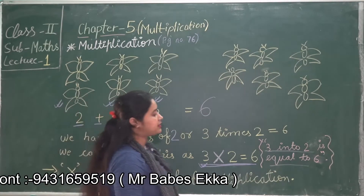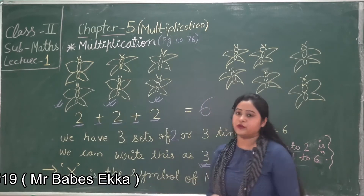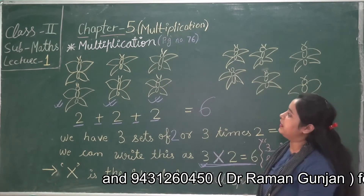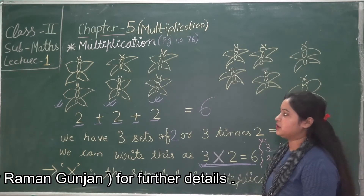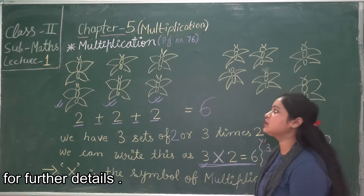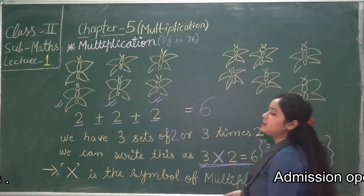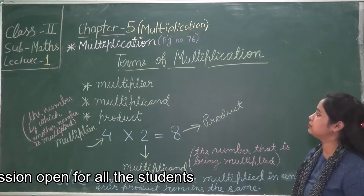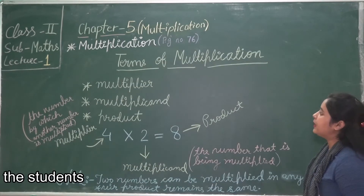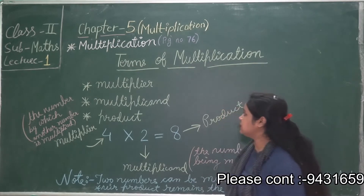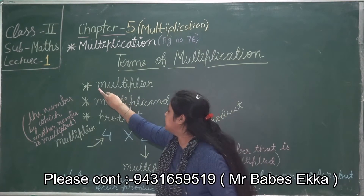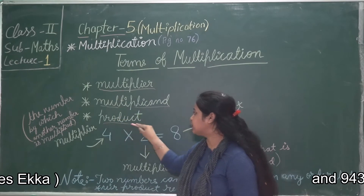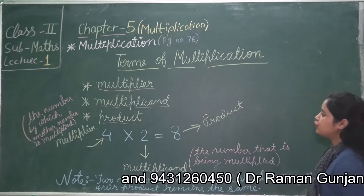The next topic we are going to discuss is the terms of multiplication. There are three terms in multiplication: they are multiplicand, multiplier, and product. We will now learn which term is called multiplicand, which is called multiplier, and which is called product.